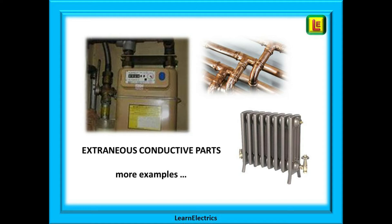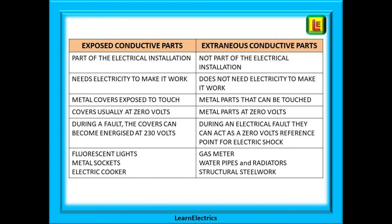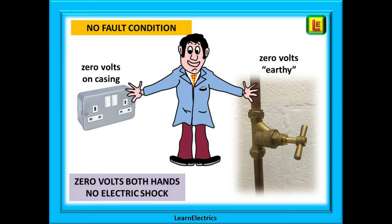Other examples of extraneous or earthy parts typical of domestic installations are shown here — for example, a gas meter, water pipes, and a central heating radiator. We have also shown the differences between exposed and extraneous parts side by side in a chart. The main thing to take away is that exposed conductive parts have electricity going to them; extraneous parts do not. It is the earthy nature of extraneous parts that introduces the danger.